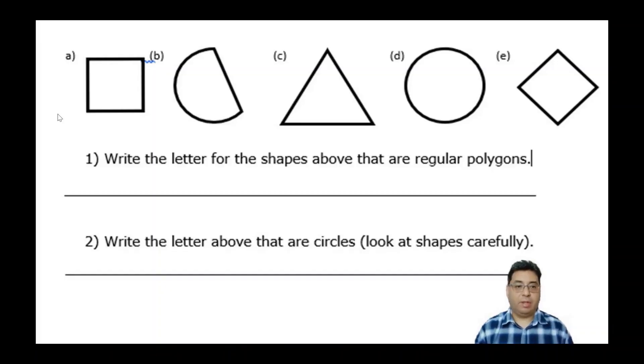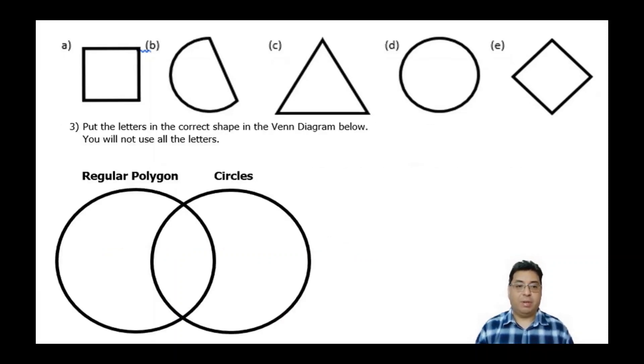For number one here, I just want you to write the letter for the shapes above that are regular polygons. And for number two, write the letter above that are circles. Look at the shapes carefully. And so number three is just asking you to put the letters in the correct shape in the Venn diagram below. You will not use all the letters.